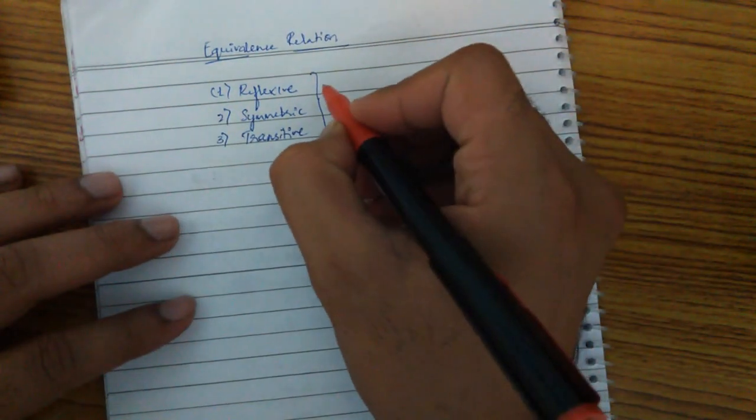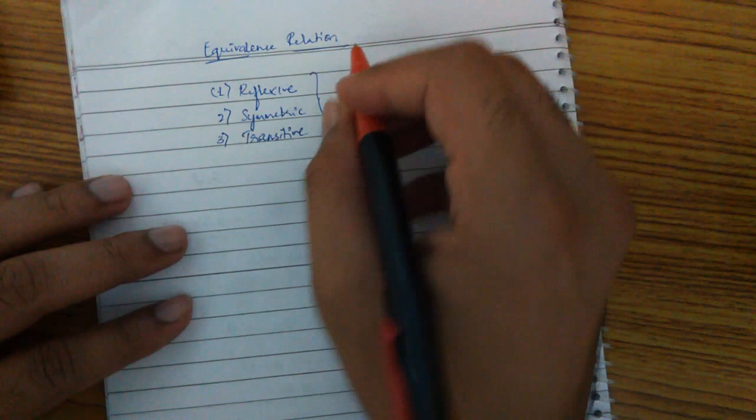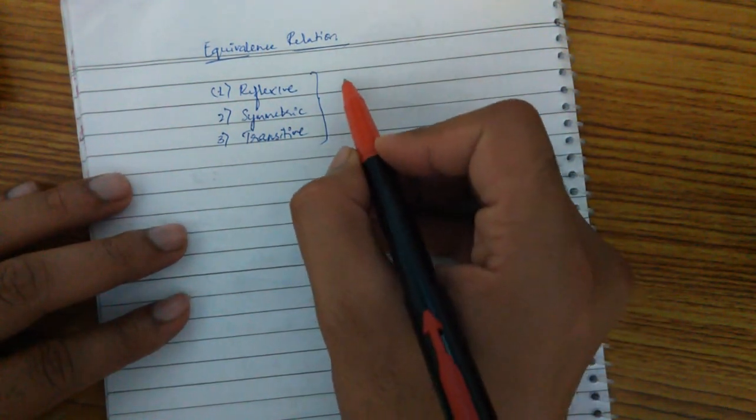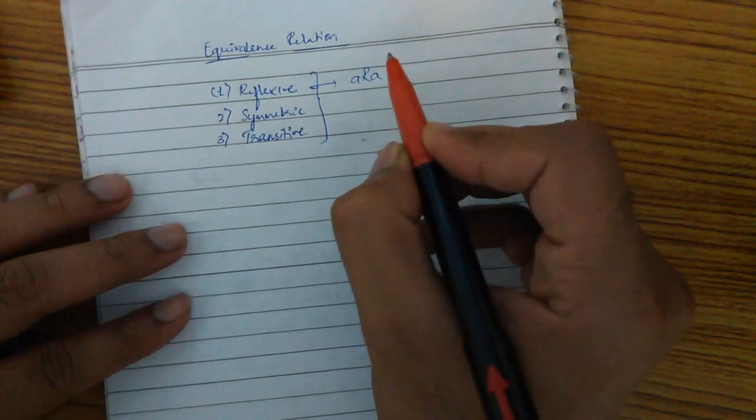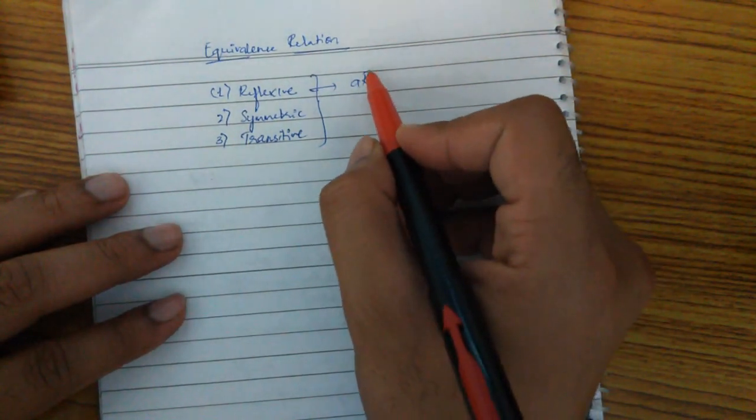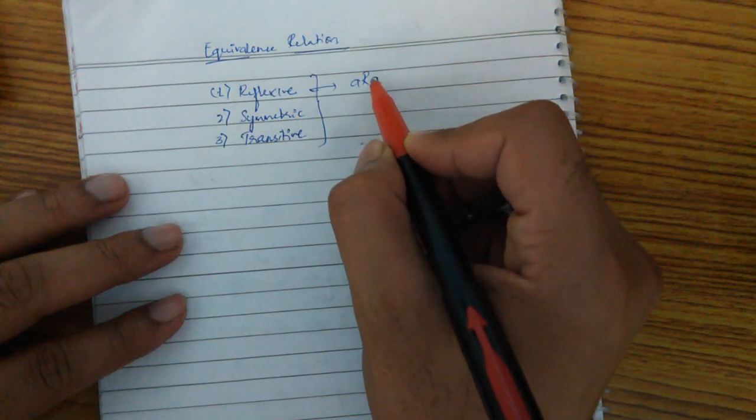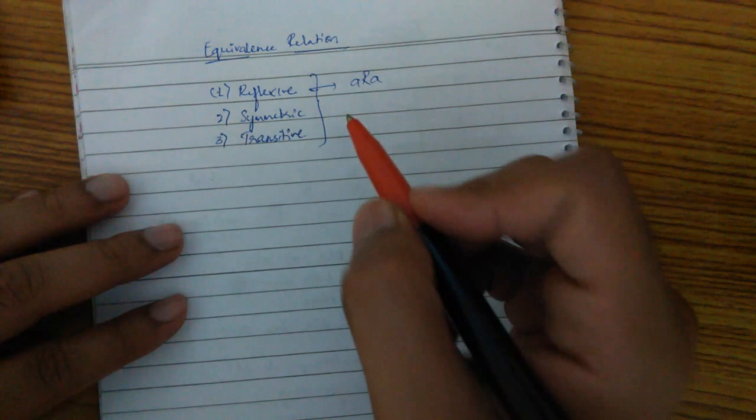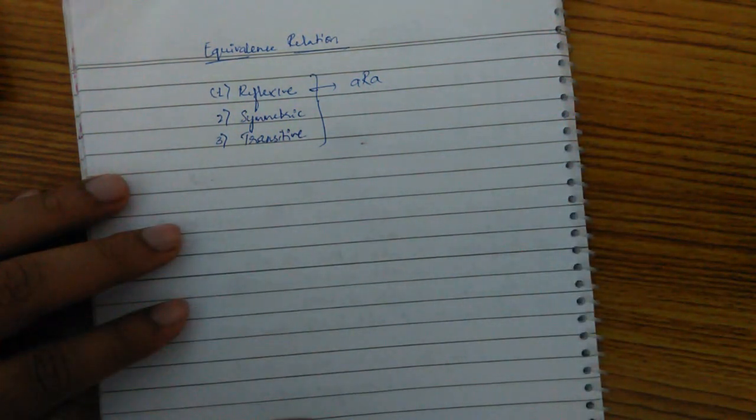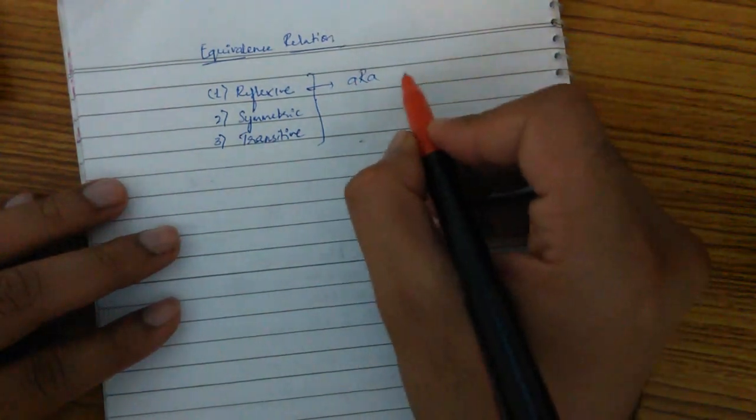Reflexive relation is something like this: A related to A, so R is a relation, A is related to A for all A in S, where S is a set. So we can say that always A is related to A. This is always true in a given set.